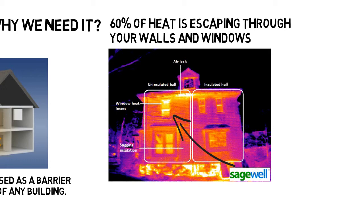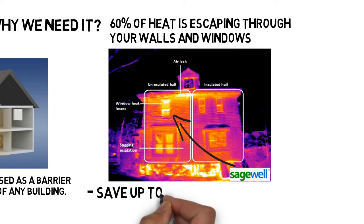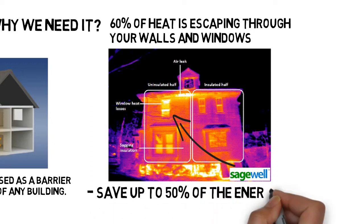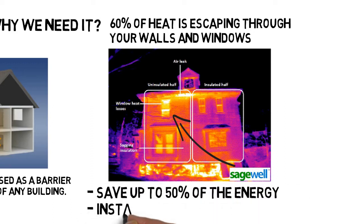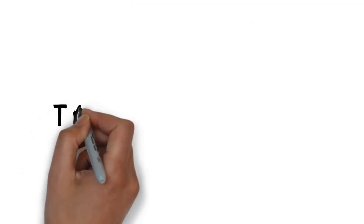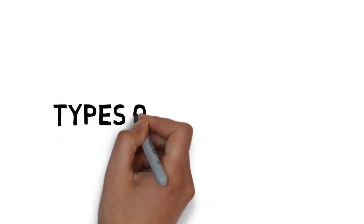Well insulated homes can save up to 50% of the energy used to heat or cool your home. This correlates to being able to install a cheaper HVAC system, since the amount of energy being lost from the home will be minimized.